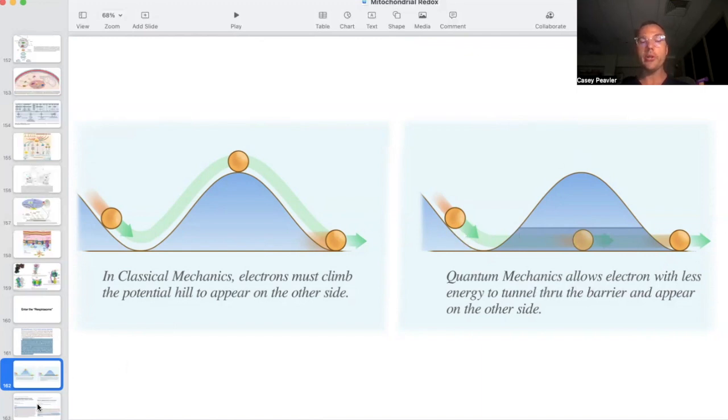This is important for mitochondria because what they have found is we have surveyed proteins with known atomic structures whose function involves electron transfer. In these, electrons can transfer up to 14 angstroms. That's a distance between redox centers, between areas where electrons are donated and received through the protein medium. Distances longer than 14 angstroms will support only a very slow electron tunneling, but could act as high ambient signals useful for regulation.